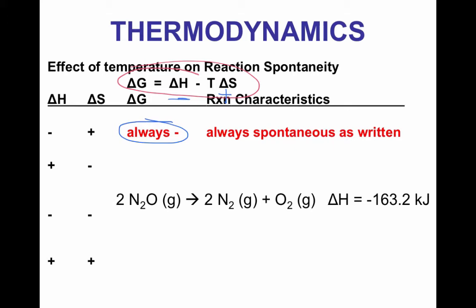This reaction is always spontaneous at any temperature, because whether T is small or large, the result will always be negative. An example is the dissociation of N₂O gas. The change in enthalpy or delta H is negative, which means heat is given off. Looking at the reaction, delta S is positive because we go from 2 moles of gas to 3 moles of gas — so it's becoming more disordered. Since delta S is positive and delta H is negative, delta G is negative, meaning the reaction is spontaneous at all temperatures. If you have a negative minus a positive, it's just going to become more negative.